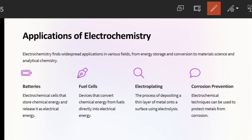Now let's look at some applications. First of all, in batteries we use electrochemical cells which convert chemical energy into electrical energy. Then in fuel cells, we also convert chemical energy into electrical energy.